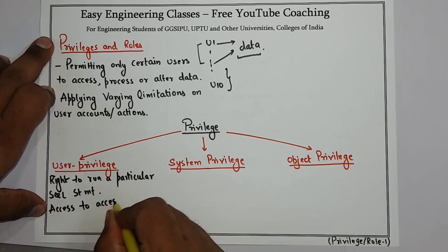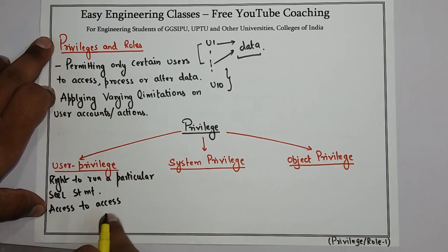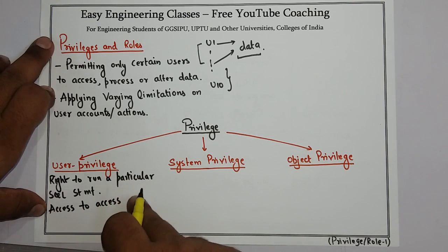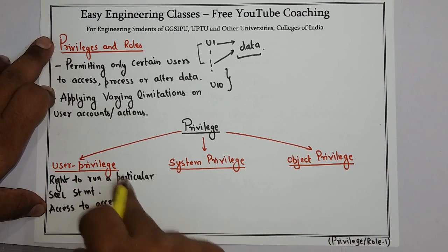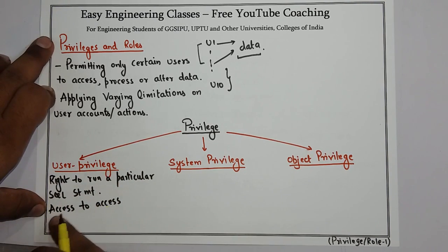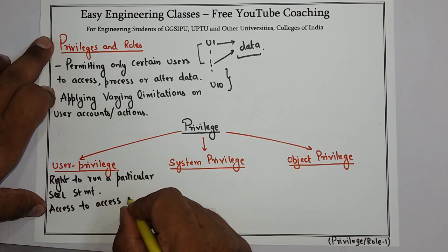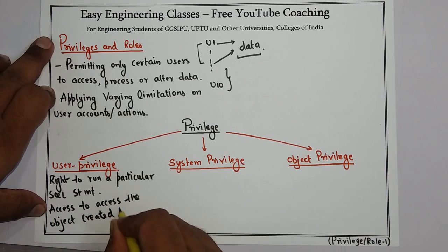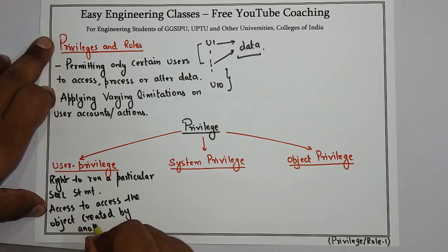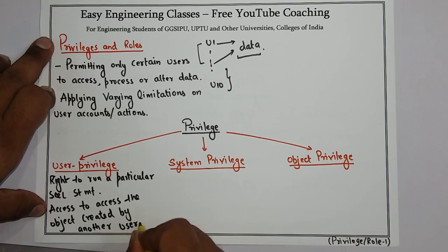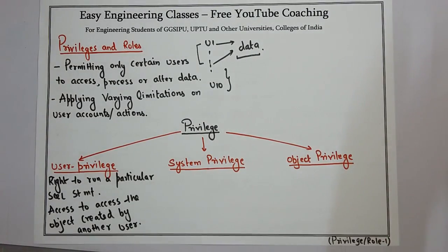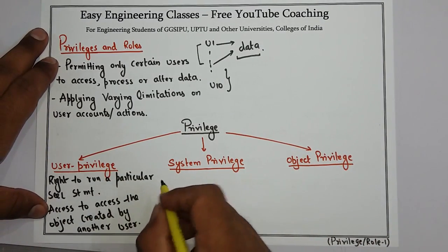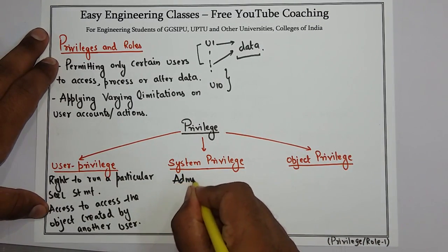For example, if there is a procedure or function created by user B, and user A has the privilege of accessing that particular procedure, then that comes under user privilege. It is essentially access to an object created by another user. Next is system privilege, which allows the grantee to perform standard admin tasks related to the database.